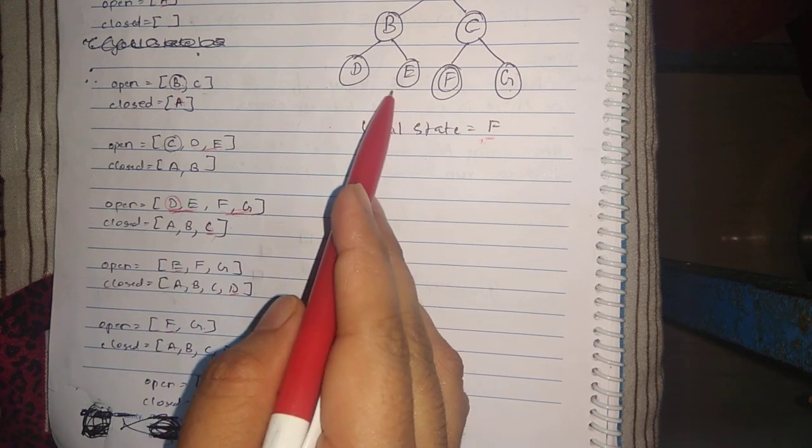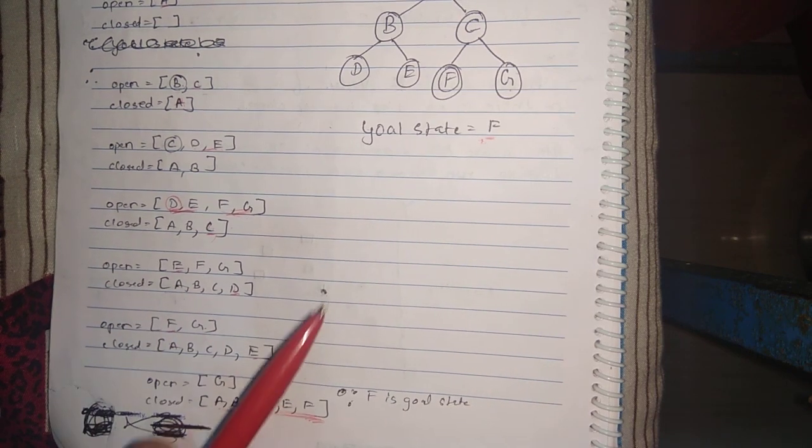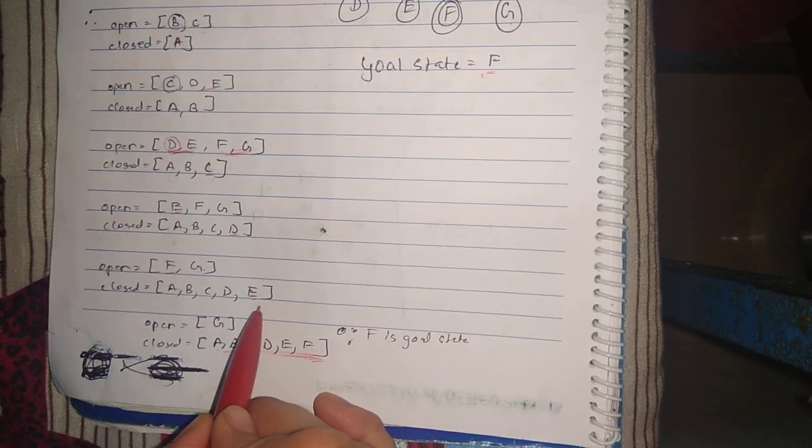The next element is E. E also doesn't have any successor and it is also not the goal state, so we'll take E and place it in the closed array.